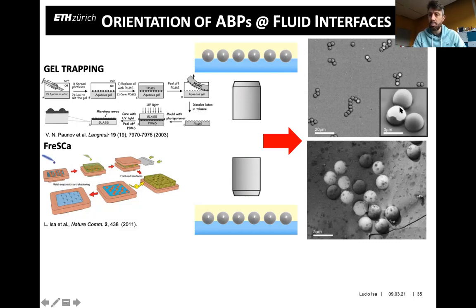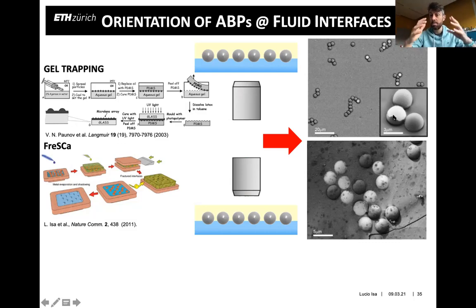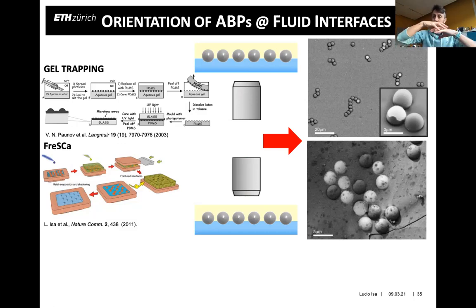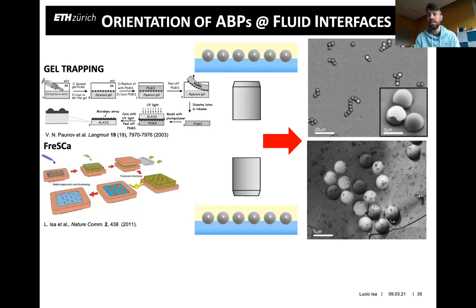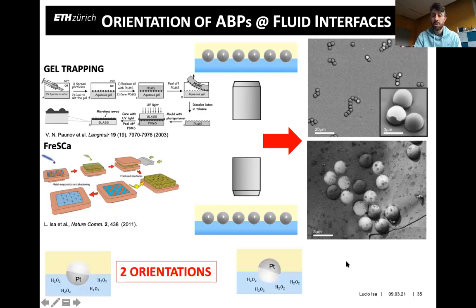Looking more closely, the cap is not a perfectly hemispherical cap but has imperfections and roughness from the coating procedure. This can cause the particle to be pinned at an orientation not exactly 90 degrees to the interface, so part of the polystyrene surface and part of the platinum are both exposed to the oil. This creates a compositional gradient and heterogeneity in the plane of the interface. As a consequence, we demonstrate two different orientations: one with platinum mostly immersed in water, and one with platinum mostly exposed to oil.